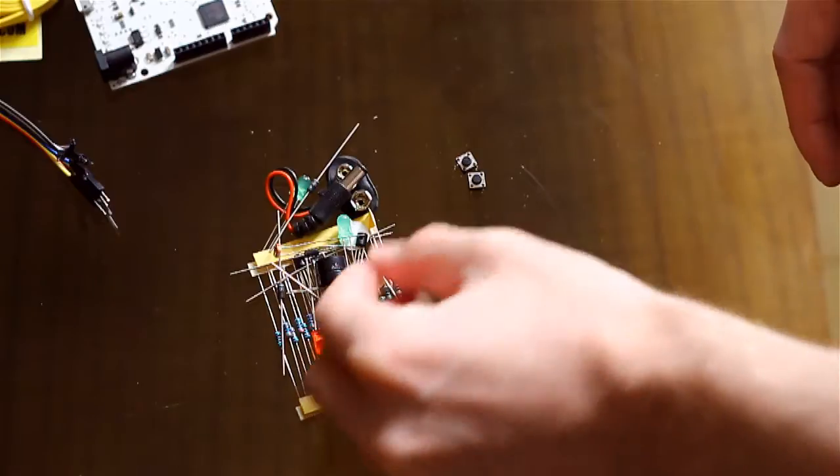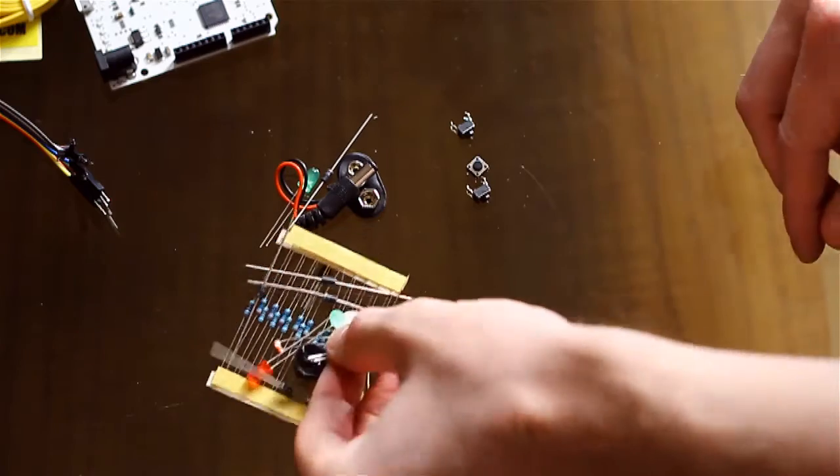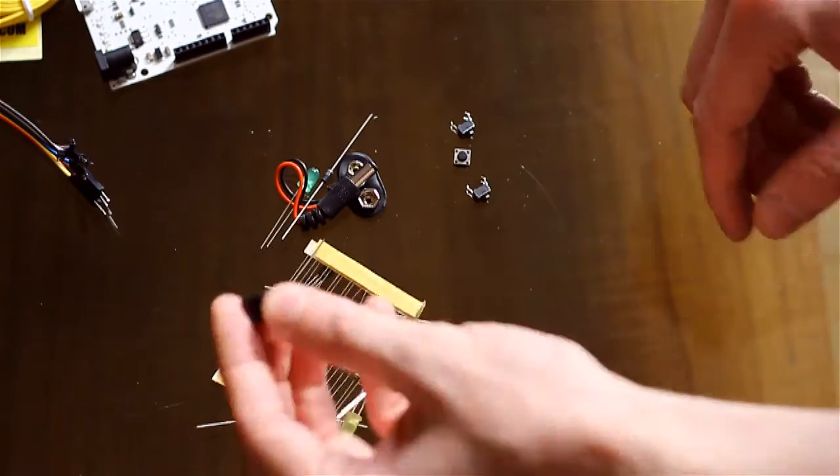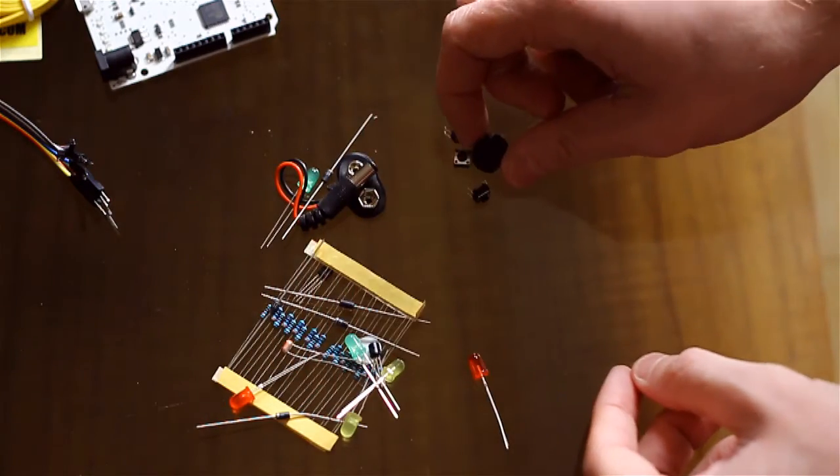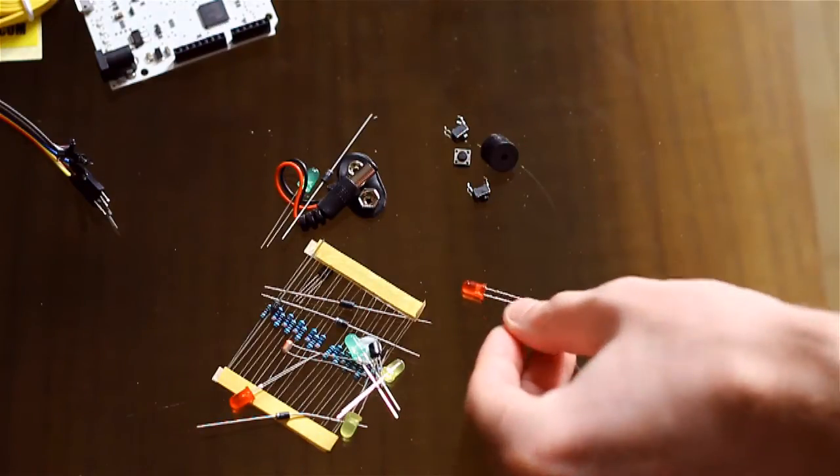And so we've got some buttons here, some of these contact buttons. So you just press them and they go on, then they come off again. So how many of those? We've got three of those. We've got a little piezo speaker. It's just a little electronic speaker.